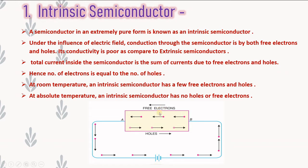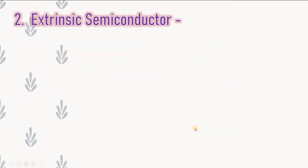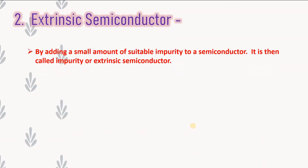In this diagram, conduction through an intrinsic semiconductor is shown by free electrons and holes. Now the second topic: extrinsic semiconductor. By adding a small amount of suitable impurity to a semiconductor, it is then called an impurity semiconductor or extrinsic semiconductor.